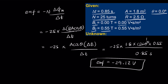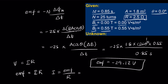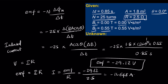Calculating: 25 times 1.8 times 0.55 divided by 0.85 equals approximately 29.12 volts, so EMF is negative 29.12 volts. Using V equals IR, the induced current I equals EMF divided by R, which is negative 29.12 divided by 2.5, giving an induced current of negative 11.648 amps.